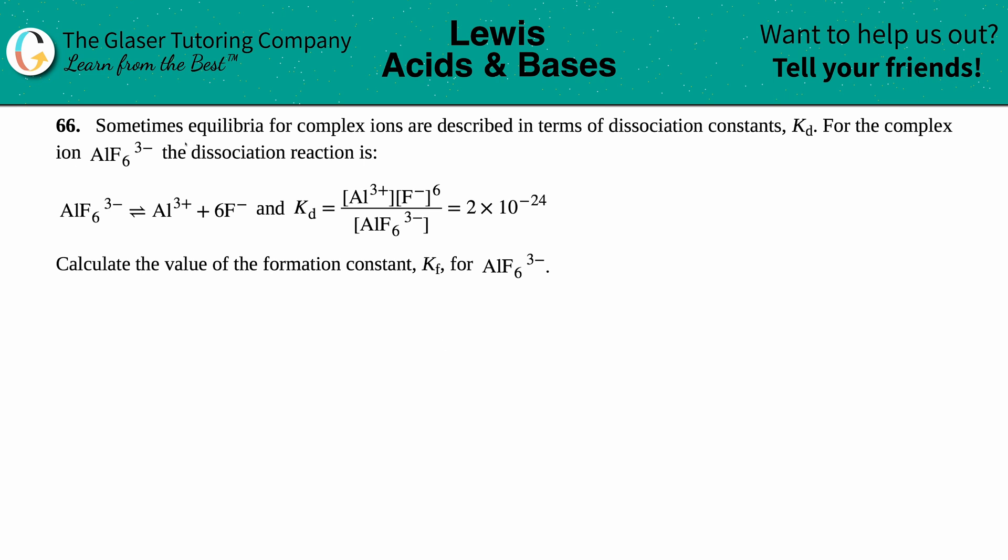Number 66: Sometimes equilibria for complex ions are described in terms of dissociation constants, Kd. For the complex ion AlF6^3-, the dissociation reaction is AlF6^3- dissociates into Al^3+ and 6F^-. The Kd is products over reactants, so the two products divided by the reactant raised to the coefficients, equal to 2×10^-24. We have to calculate the value of the formation constant Kf for this complex ion.